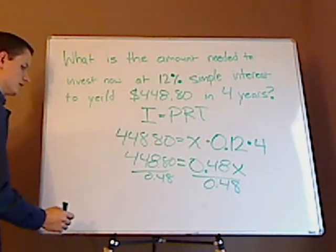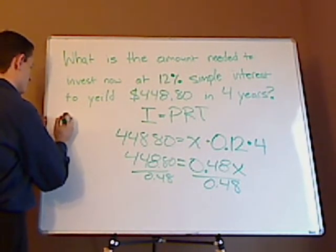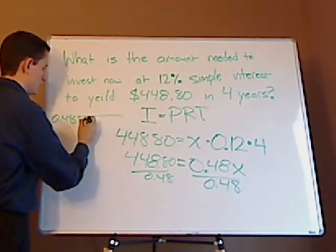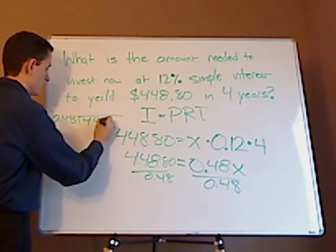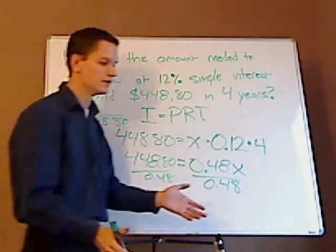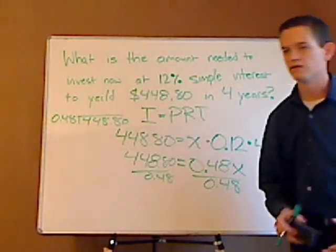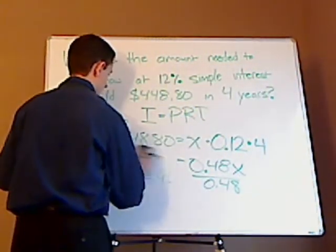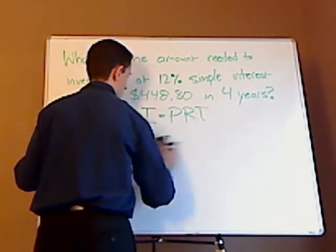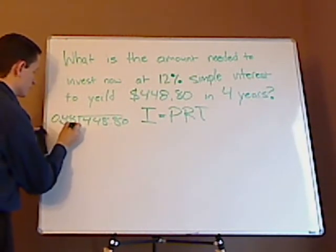The next thing you want to do is divide both sides by 0.48. All right, so you're going to have to do some long division. I'm going to move the decimal place over twice.